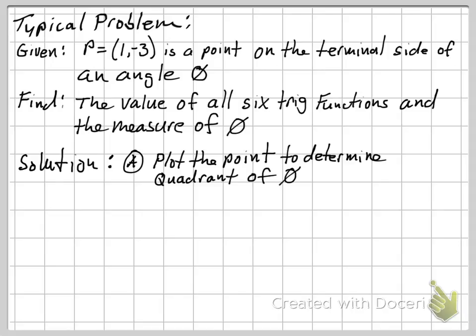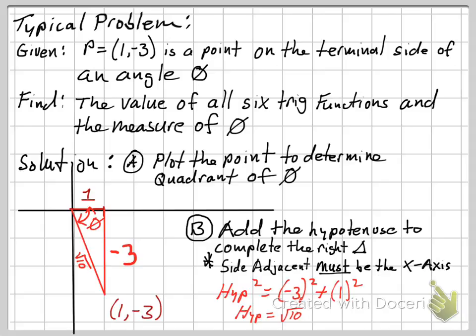So, real quick, what we do is we take this and the first thing we do is we plot the point. There's my side adjacent 1, my side opposite negative 3, there's my point 1, negative 3. I use trigonometry to find the distance there between that point in the origin.